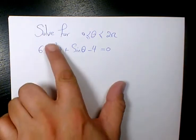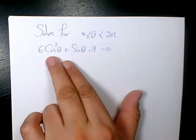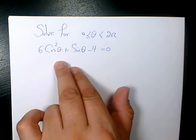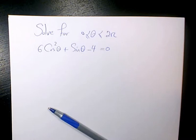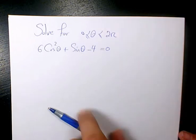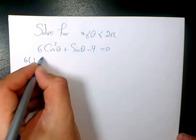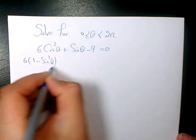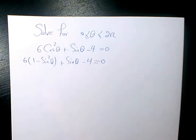Since we have cosine squared theta here and we have sine theta, I need to convert this cosine squared theta to sine squared theta. We know sine squared theta plus cosine squared theta is always equal to 1, so cosine squared theta equals 1 minus sine squared theta. So I write: 6 times (1 minus sine squared theta) plus sine theta minus 4 equals to 0.